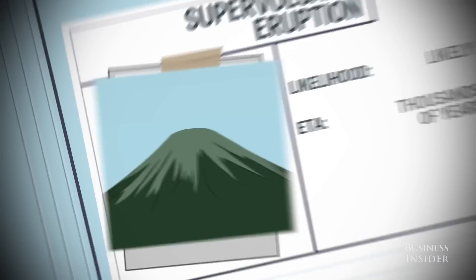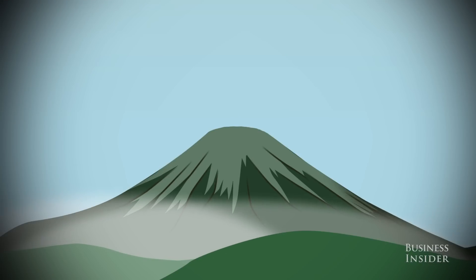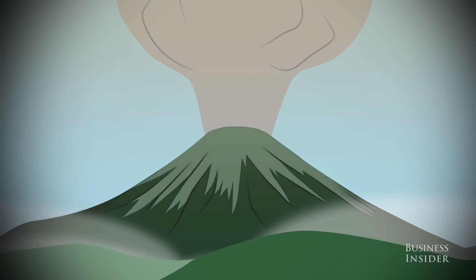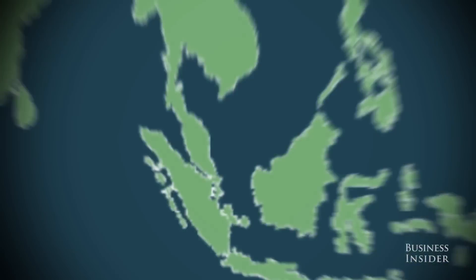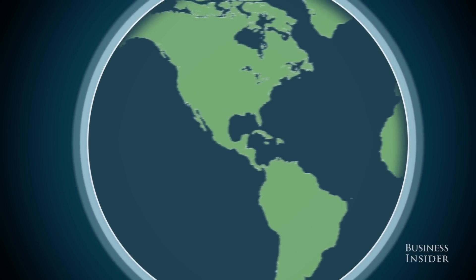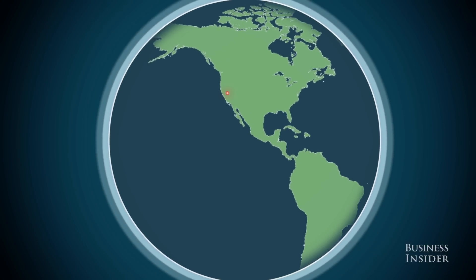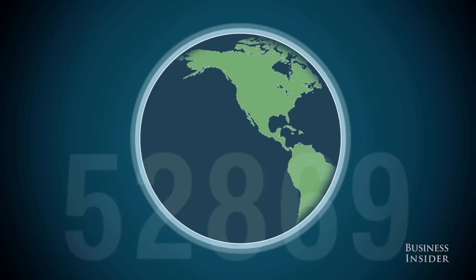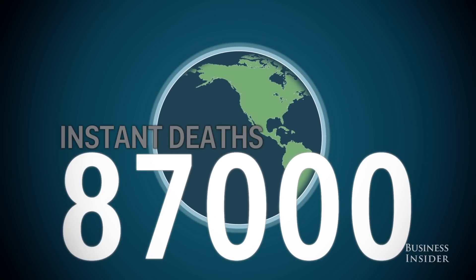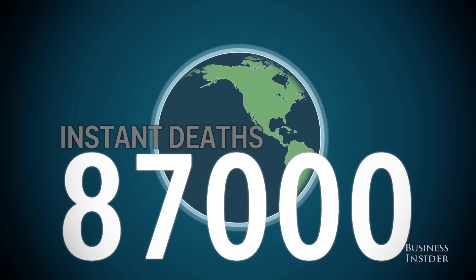70,000 years ago, a supervolcano at Lake Toba in Indonesia erupted, causing a volcanic winter lasting six to ten years, and potentially a thousand-year cooling period. There are six known supervolcanoes around the world. The one under Yellowstone National Park spewed over a thousand cubic meters of ash and lava in a single eruption 640,000 years ago. Some researchers have estimated that 87,000 people would die instantly if it were to erupt today.